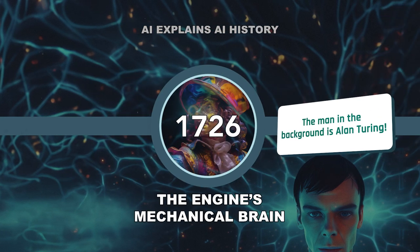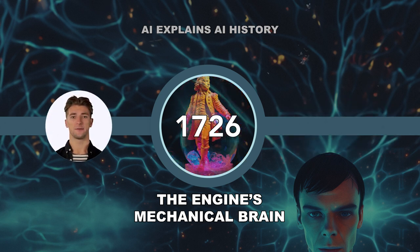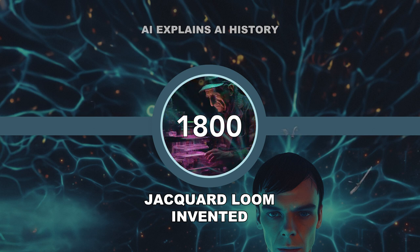In Jonathan Swift's novel Gulliver's Travels, published in 1726, an AI idea called the engine emerges. The engine was a robotic machine on the island of Laputa that could learn knowledge in a logical way — a really early idea of a machine that could act like a human brain. Jumping to the year 1800, Joseph Marie Jacquard developed the Jacquard Loom, a programmable device that used punch cards to control the sequence of operations, a significant step towards the development of programmable machines.